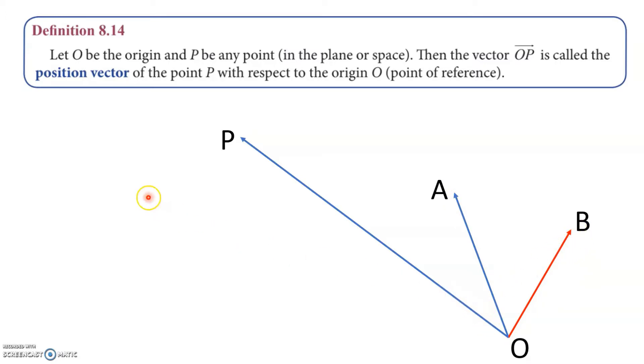So in simple terms, let O be the origin and P be any point in the plane or space. Then the vector OP is called the position vector of the point P with respect to the origin O.